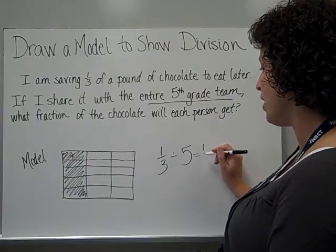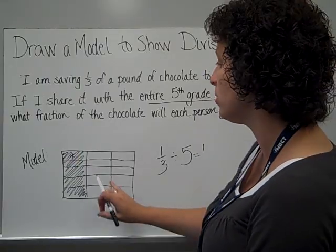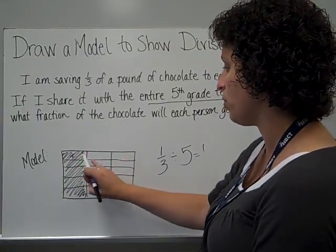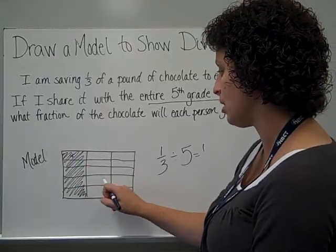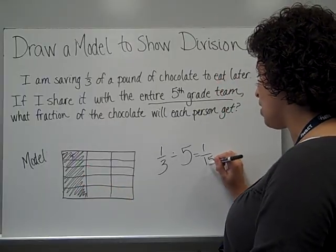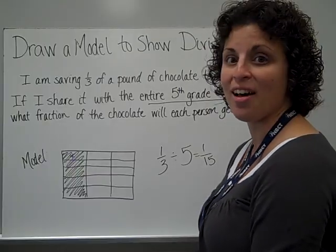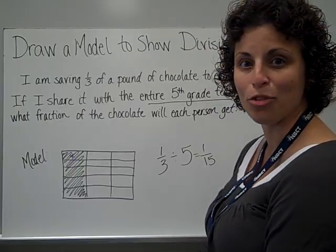I'm going to only get one of those pieces. And so that is 1 out of how many now? 1, 2, 3, 4, 5, 6, 7, 8, 9, 10, 11, 12, 13, 14, 15. So I would get 1 fifteenth of a pound of chocolate to eat for myself.